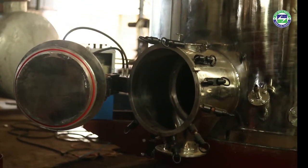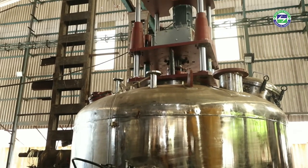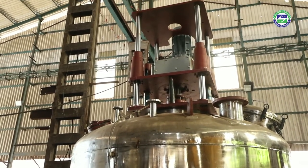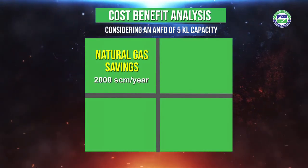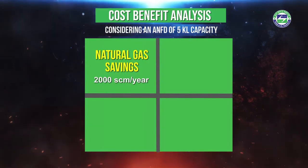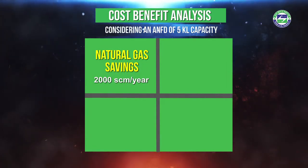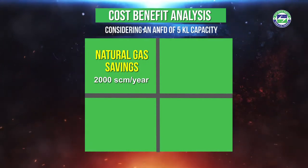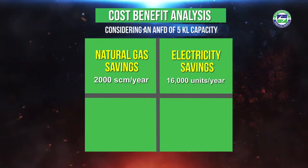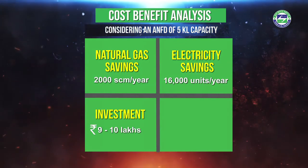To understand the energy and monetary benefits, a representative case of a five kilolitre reactor capacity is considered for cost-benefit analysis. The installation of an ANFD of five kilolitre capacity will lead to savings of natural gas by up to 2,000 cubic meters and around 16,000 units of electricity annually.